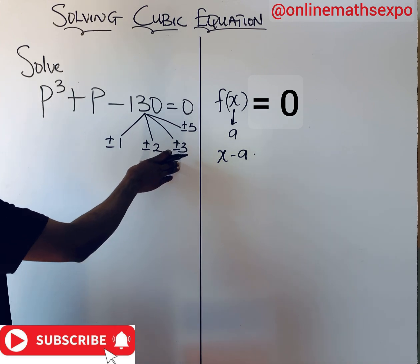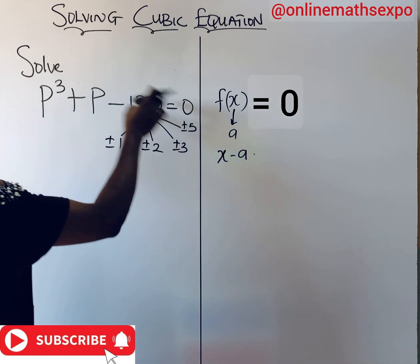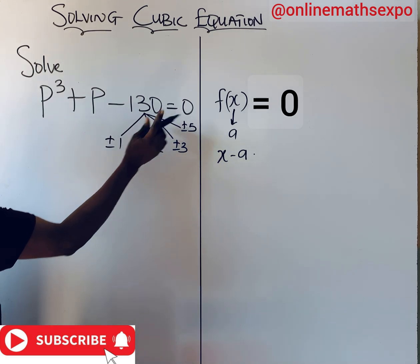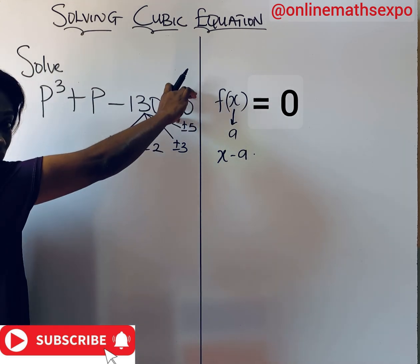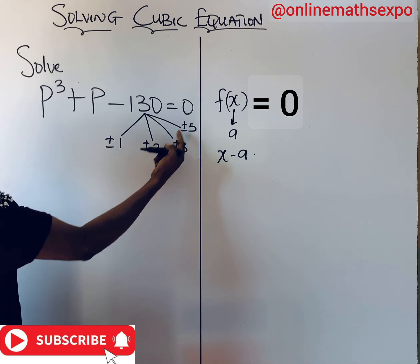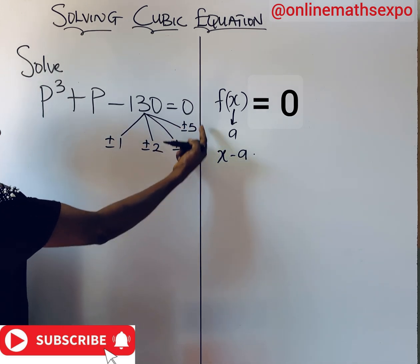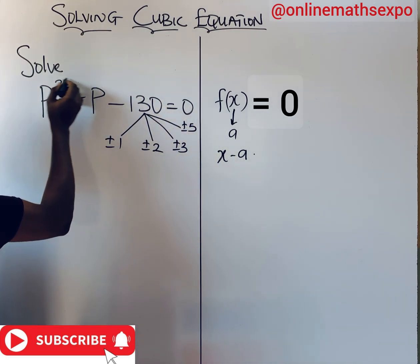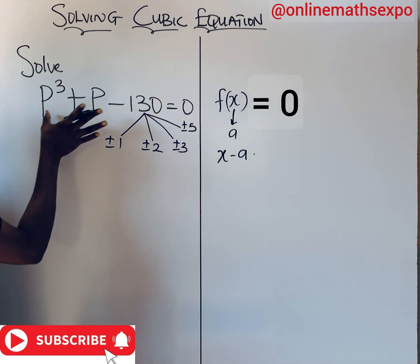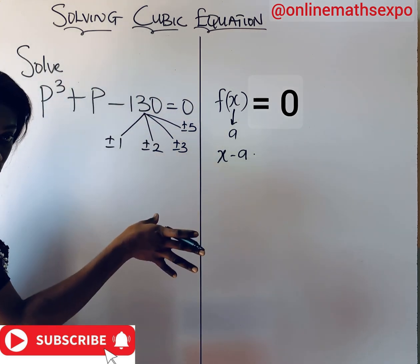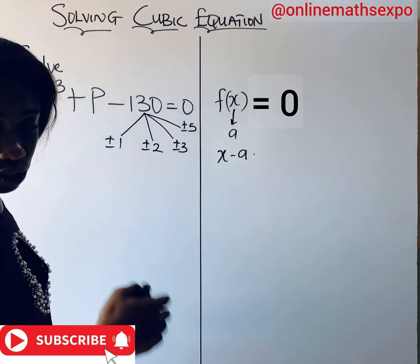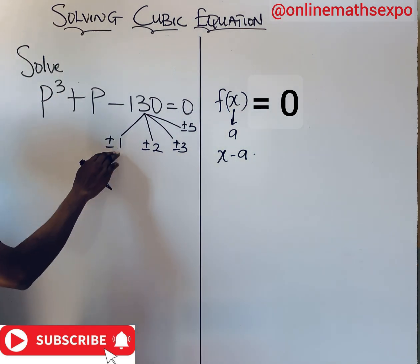These are some of the factors of 130. If you plug in any of these factors as the value of p into the left side of the equation and it becomes equal to zero — not because of the zero on the right side, but on its own — then that value is a factor.